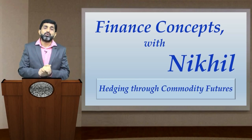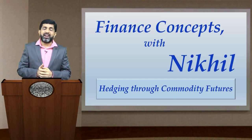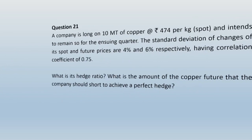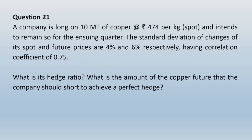In simple words, we are trying to hedge the risk of any commodity through commodity futures. Let us take an example — question number 21. A company is long on 10 metric tons of copper at the rate of rupees 474 per kg spot and intends to remain so for the ensuing quarter. The standard deviation of changes in its spot and futures prices are 4% and 6% respectively, having a correlation coefficient of 0.75. What is its hedge ratio, and what is the amount of copper futures that the company should short to achieve a perfect hedge?